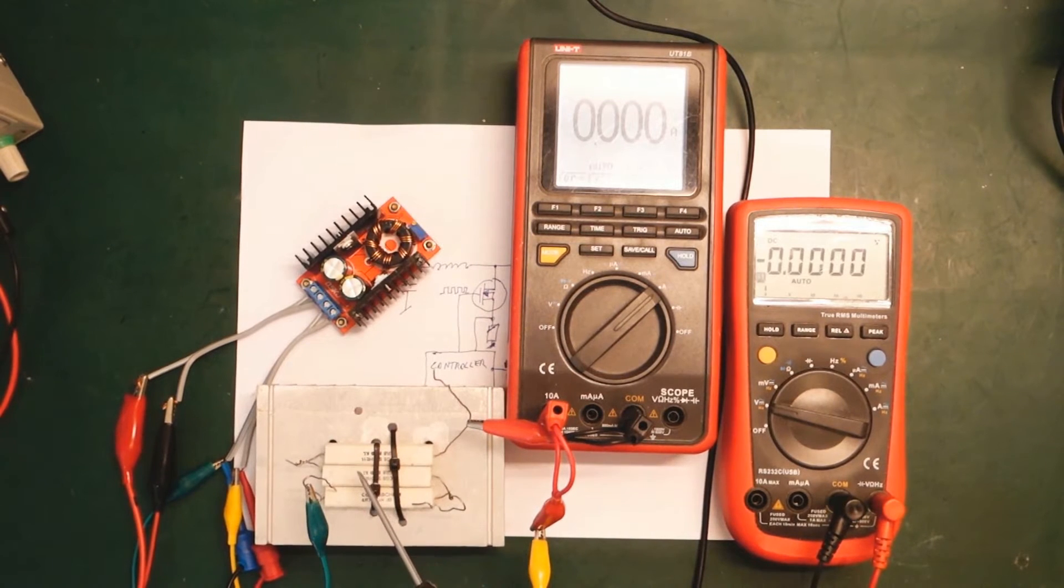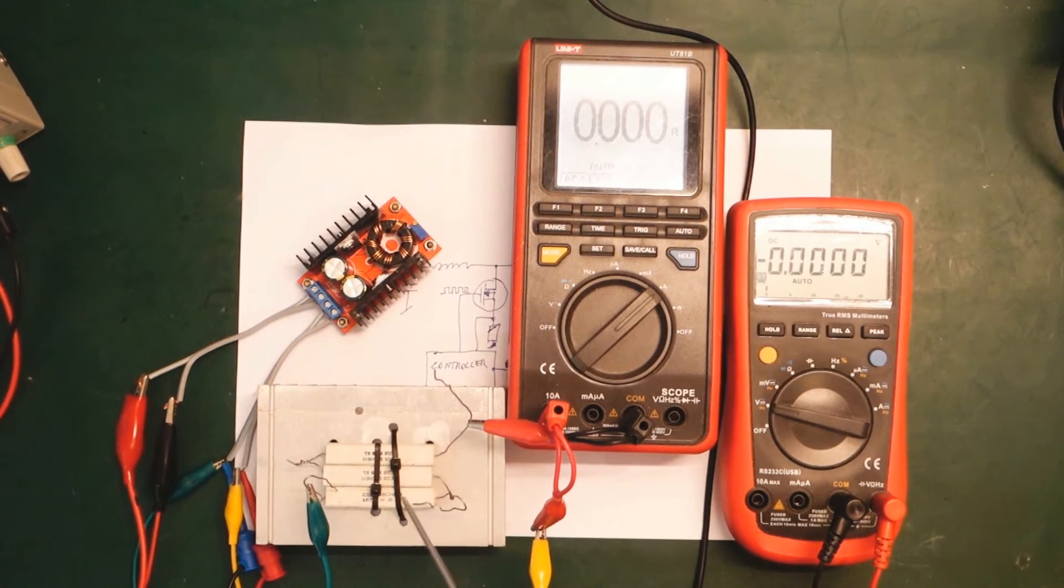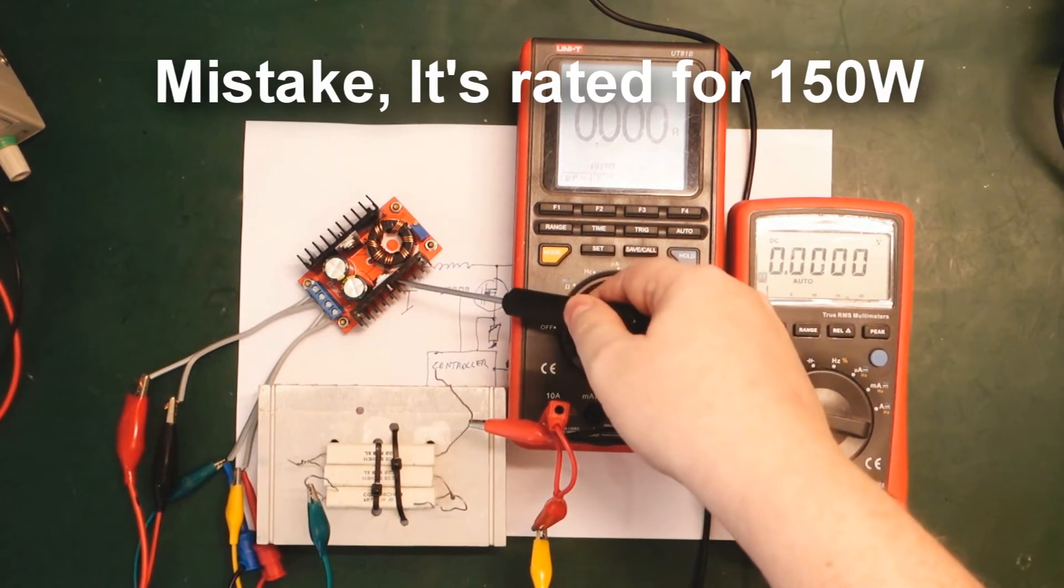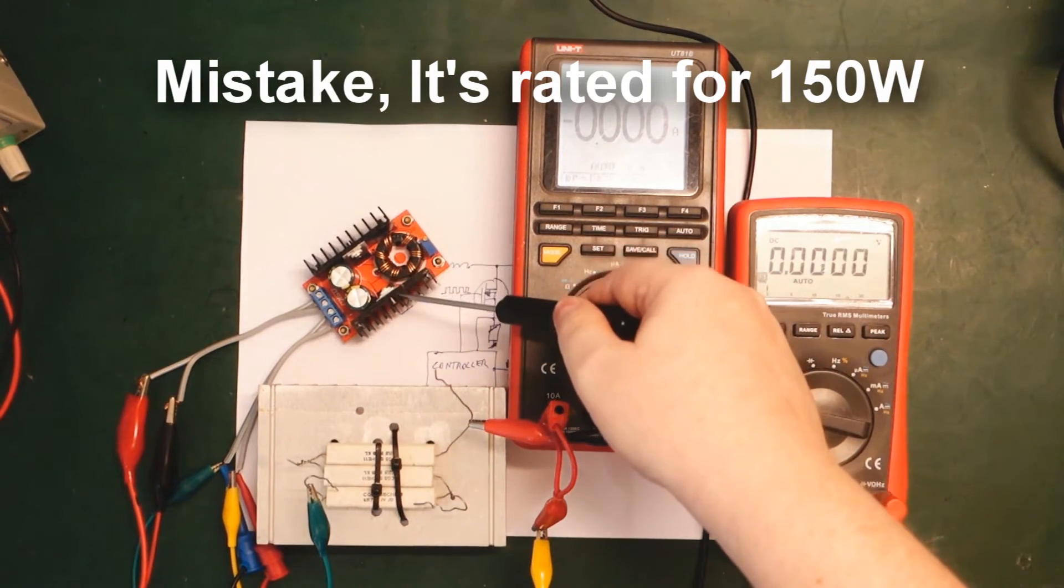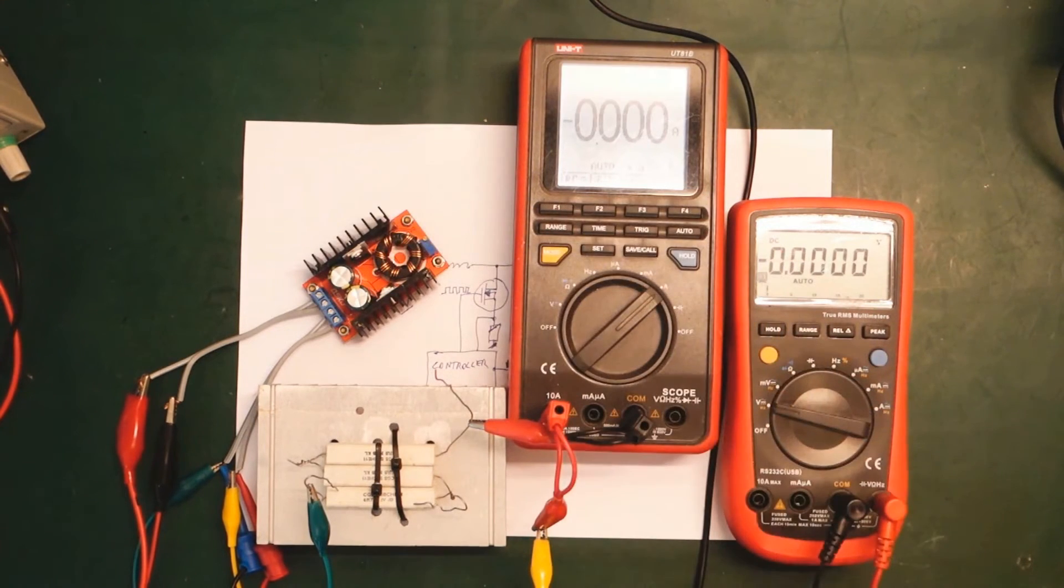I hooked up a bigger load. Well, it's still just some power resistance on a heat sink. But much lower resistance. We will not be able to test the claimed 300 watt capability of the boost converter. Because my power supply, bench supply, will only be able to deliver up to 5 amps. Anyway, let's try run this and see what it looks like.